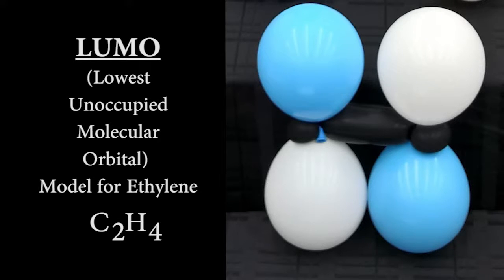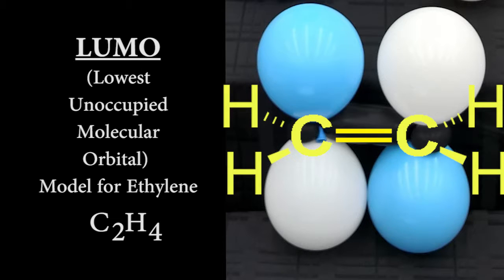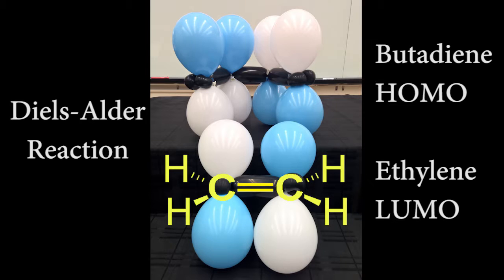Okay, in this video we're going to make the lowest unoccupied molecular orbital for ethylene so that we can use this model along with butadiene for the Diels-Alder reaction to show in class.